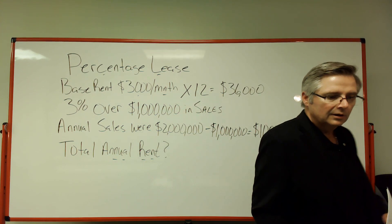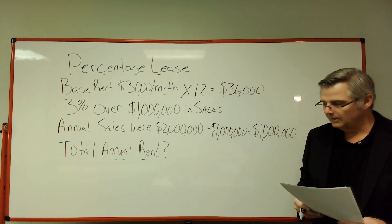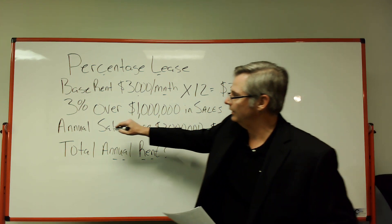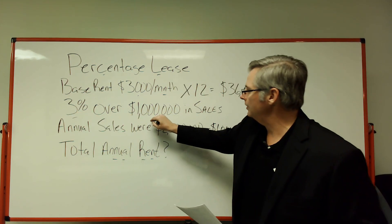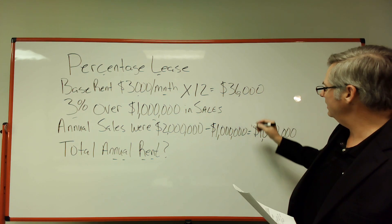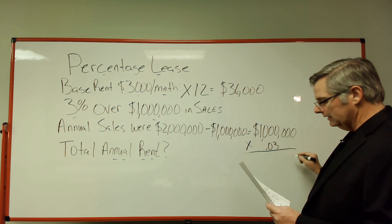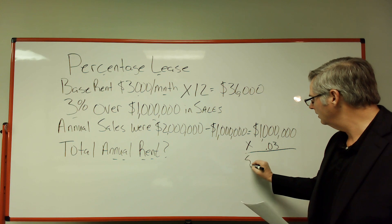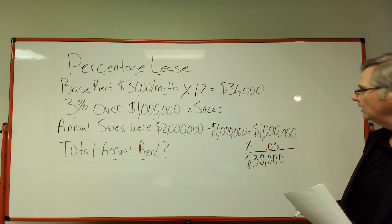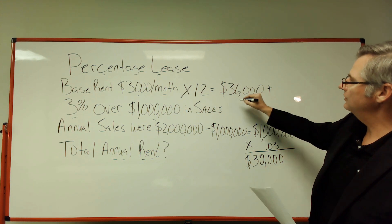They made an extra million dollars over that first million dollars. The lease says they're going to charge three percent on top of that - if you make more than a million bucks, which we know they did, they're going to charge you three percent. So we take that one million times 0.03, and that gives you thirty thousand dollars. That is your overage.